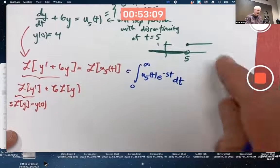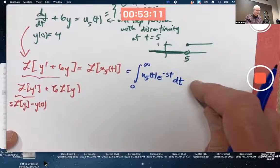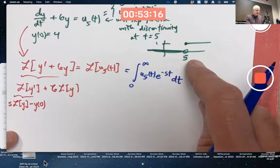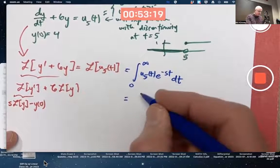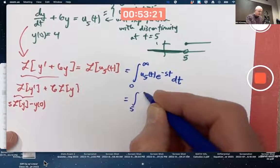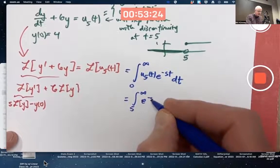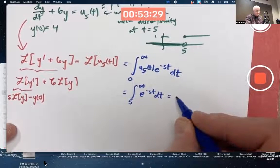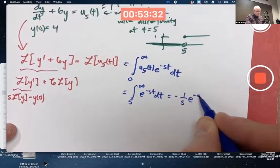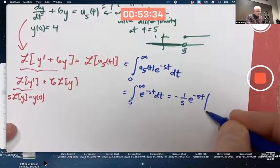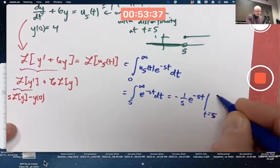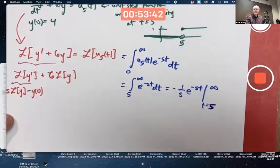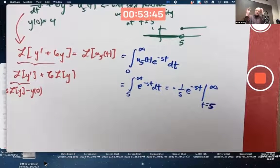How to do this integral, though? It's easier than it looks. u5 of t is 0 when t is less than 5, and 1 when t is bigger than 5. So, this integral simplifies to an integral from 5 to infinity of 1 times e to the negative st. That looks like an integral we can do. t is going from 5 to infinity here. That's a 5, not an s.